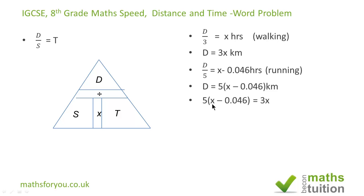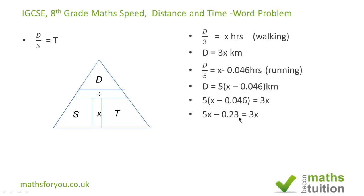Because the distance is constant, 5 times (x minus 0.046) equals 3x. When you expand the bracket you have 5x minus 0.23 equals 3x. Taking 3x across and minus 0.23 to the right hand side, we end up with 2x equals 0.23.